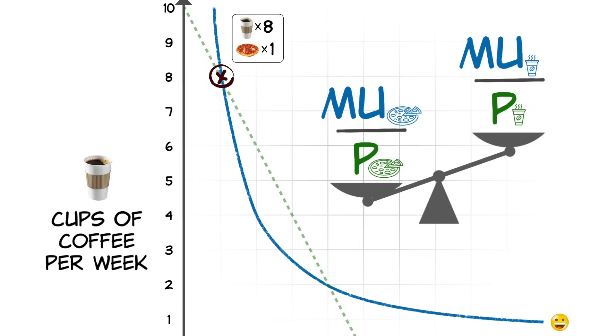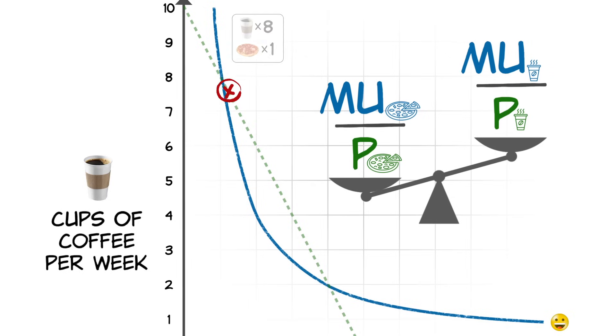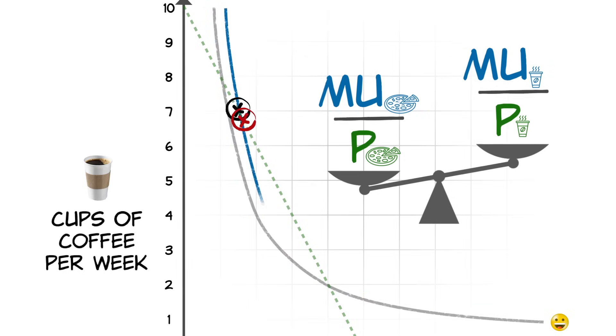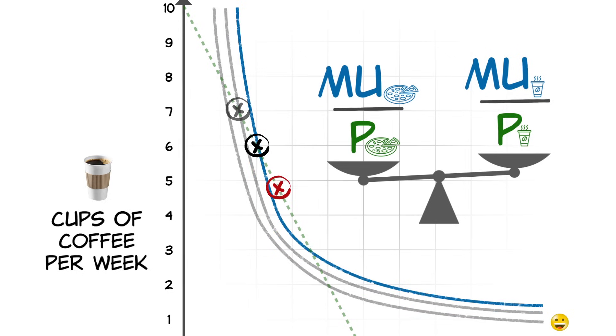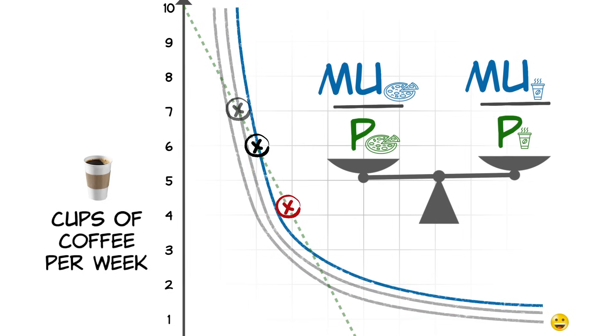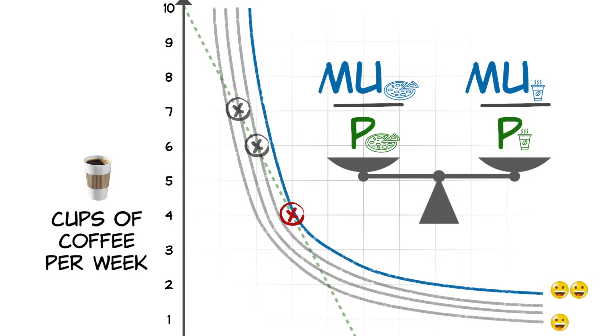At this point, your marginal utility per dollar of pizza is greater than your marginal utility per dollar from cups of coffee. As you get more pizzas and are left with fewer cups of coffee, your marginal utility from pizzas decreases and your marginal utility from cups of coffee increases. You will stop getting additional pizzas when your marginal utility per dollar from both goods is equal. Very few of us calculate marginal utility when we choose what to buy, but these concepts can help you understand your world and guide better decisions.